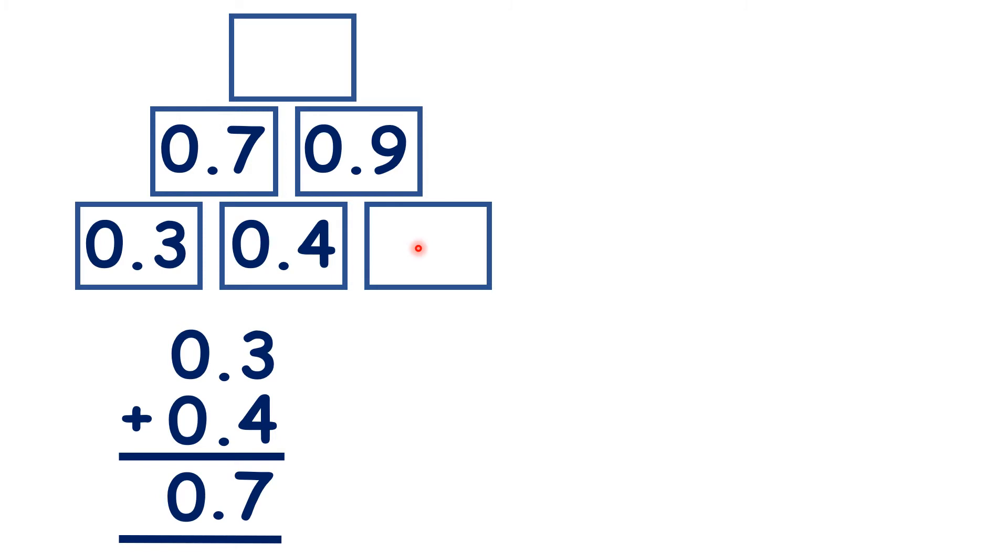Now what can we do to find this brick here? So 0.4 plus something is 0.9. So we can subtract 0.4 from 0.9. That gives us 0.5.